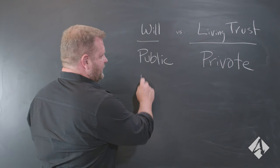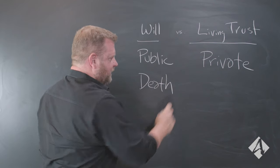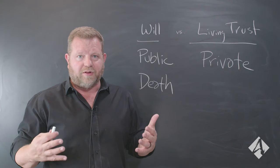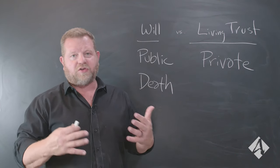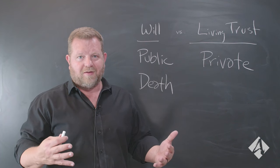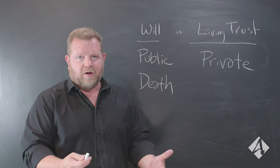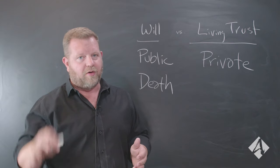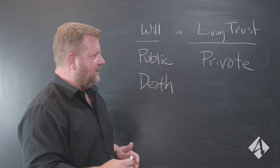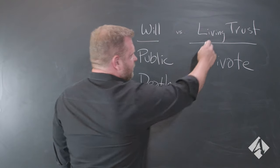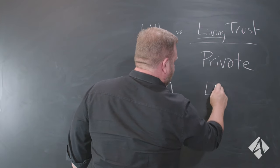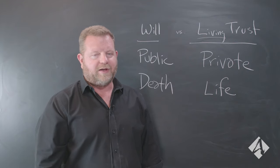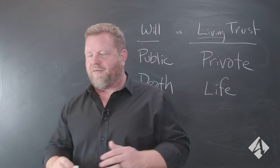Wills are a public instrument — it's out there. Living trust is private. That's a big one. A will is only effective upon death. I actually know a practitioner who does probates and wills, and they said: it's actually nice because if I screw up, there's nobody there to sue me — the client's gone, I'm just dealing with the family. A living trust, on the other hand, is effective during your life, so it's immediately superior because it covers the entire gamut.